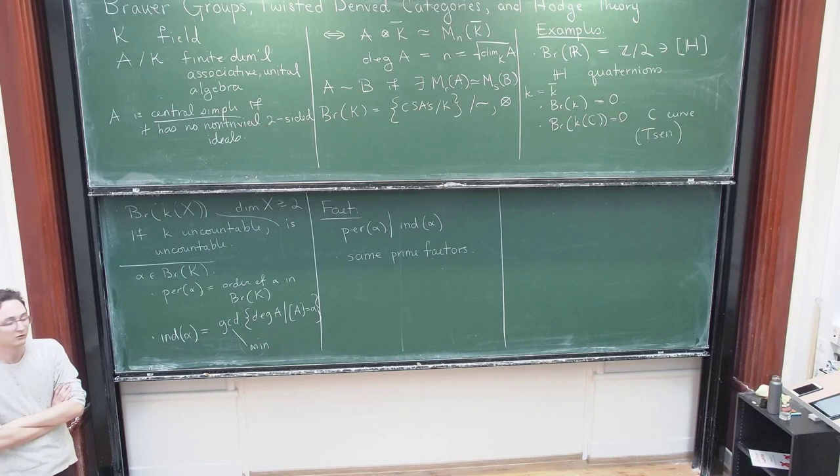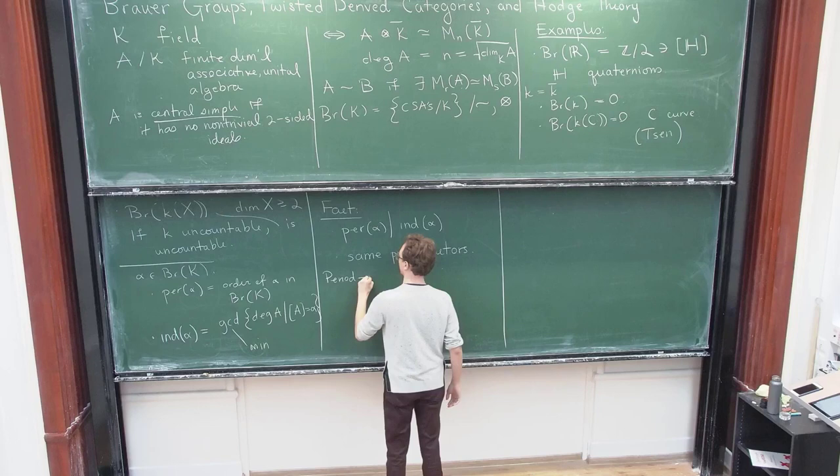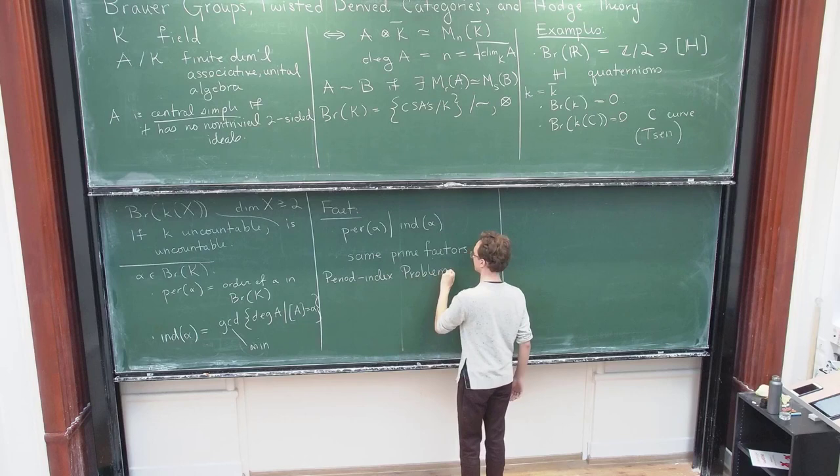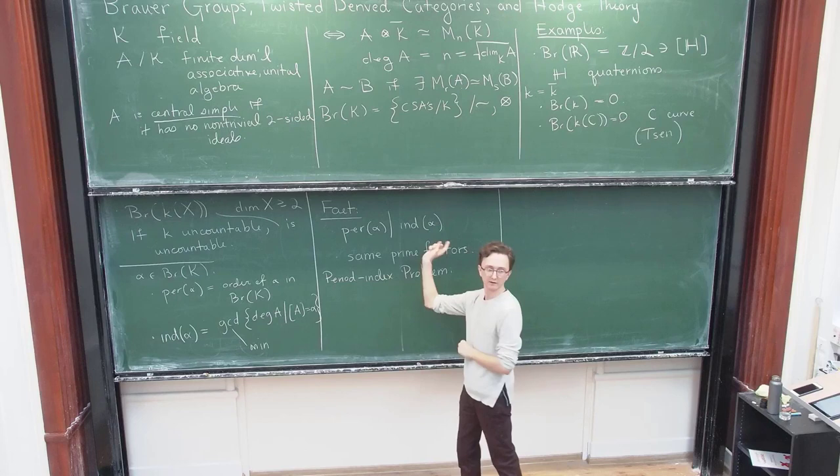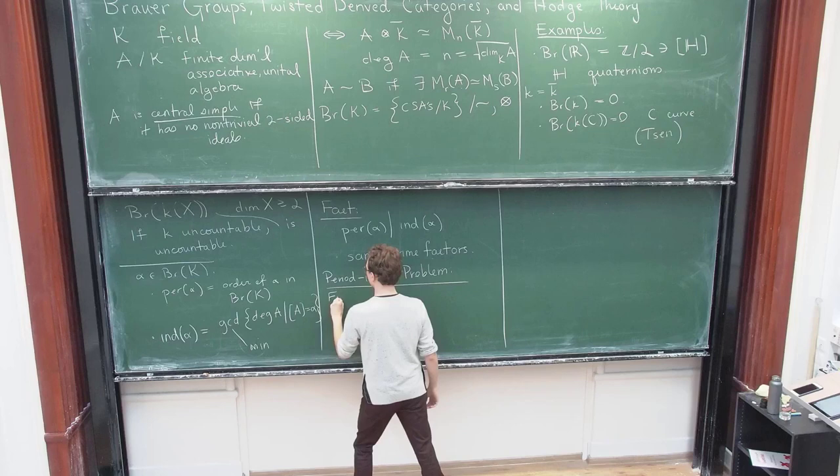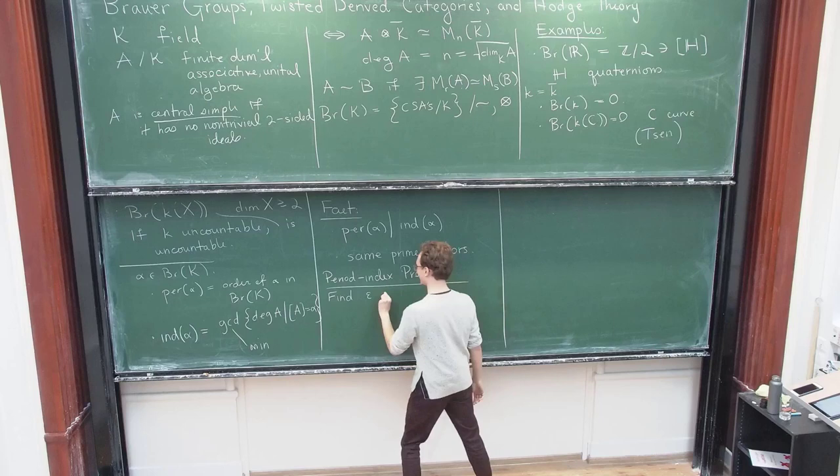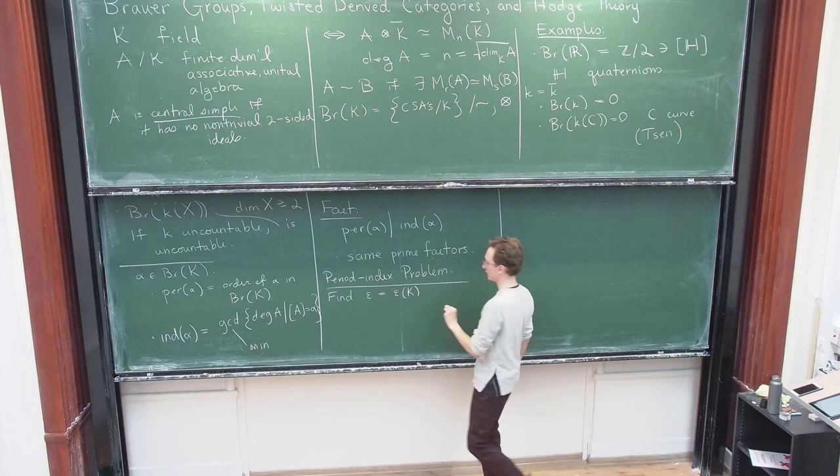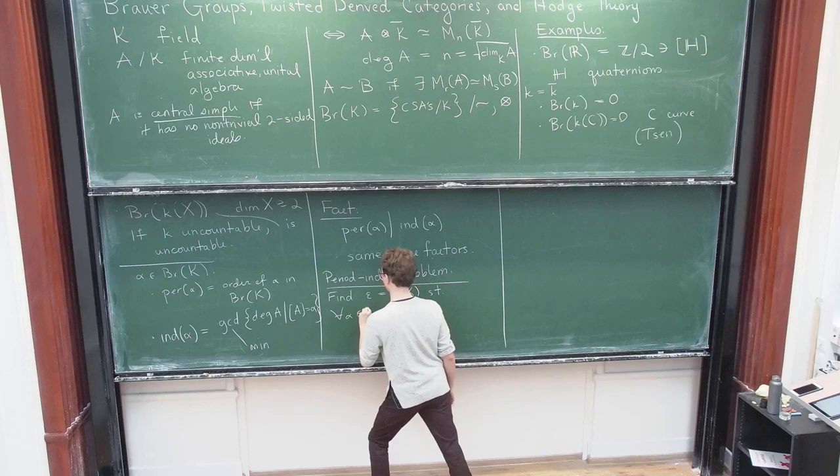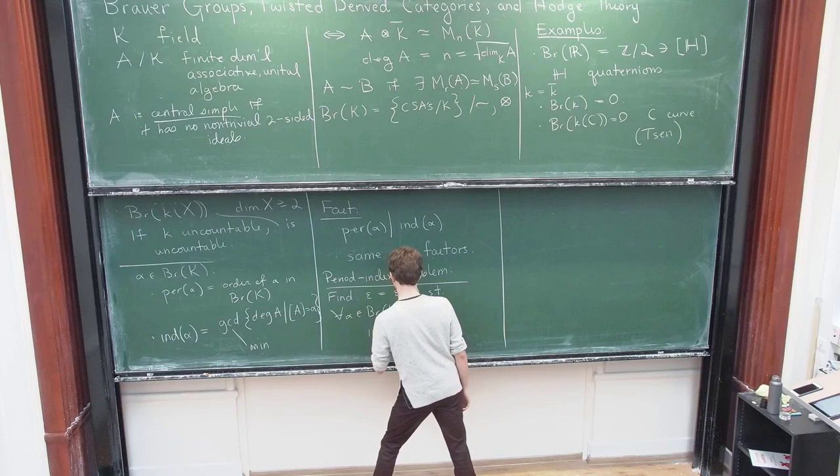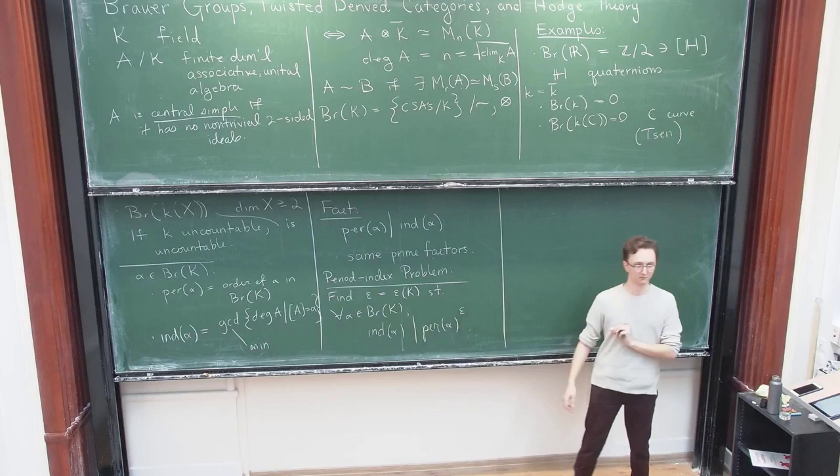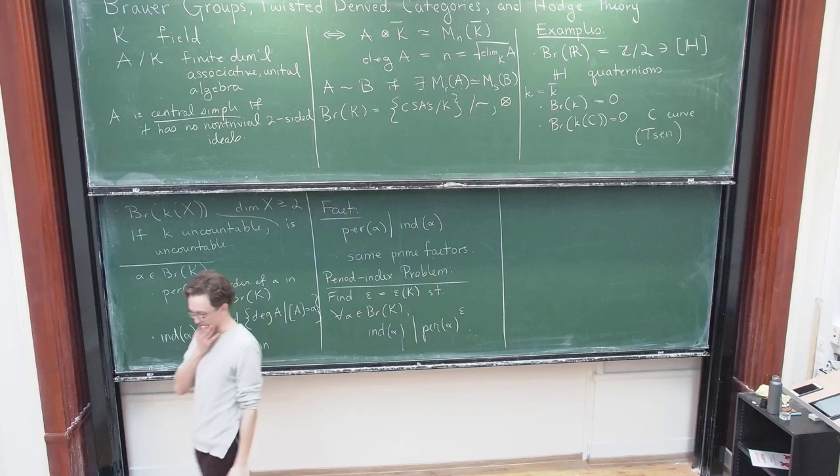And there is a sort of an ancient problem in the theory of Brouwer groups called the period index problem. Which basically asks how much larger the index is allowed to be. And since they have the same prime factors, this is a very natural way to ask it, which is to find a constant, I guess I'll call it epsilon, one of those small, but the constant, ideally depending just on the field, such that for any Brouwer class in the field, the index divides the period raised to that power. This is the period index problem.